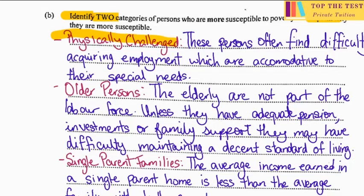The second category is older persons. The elderly are not part of the labor force — if you're over 60 or 65, depending on the retirement age in your country, you are outside the labor force. Unless they have an adequate pension, investments, or family support, they may have difficulty maintaining a decent standard of living.